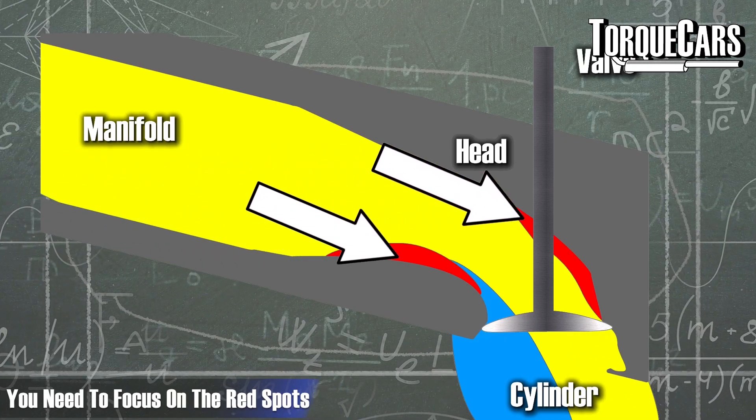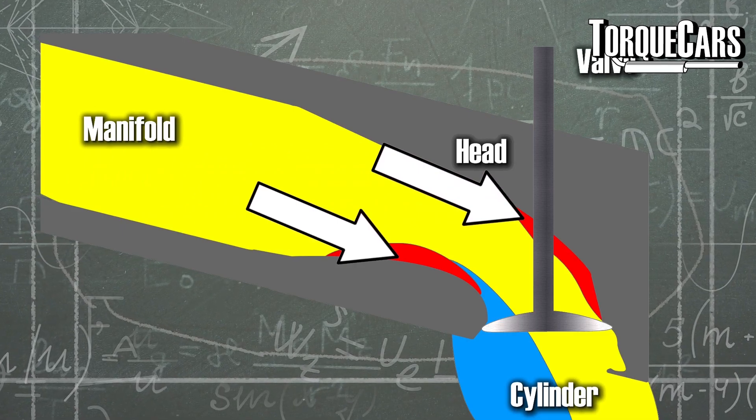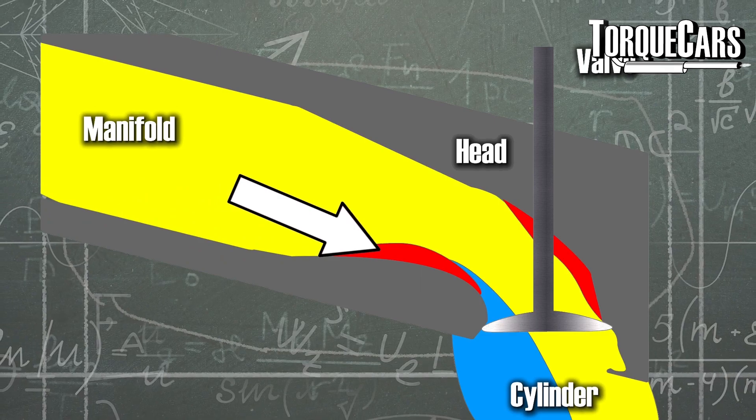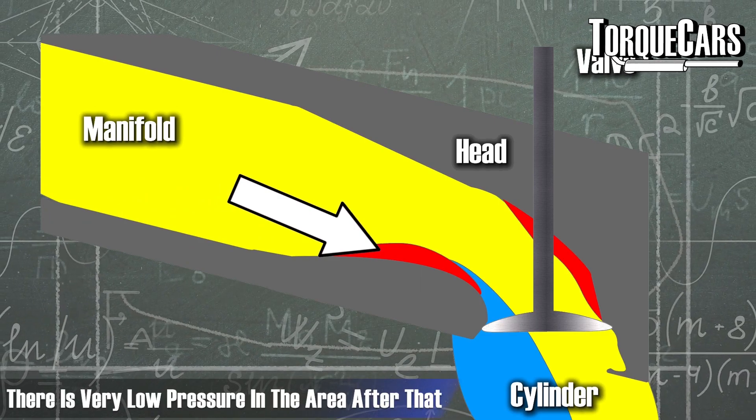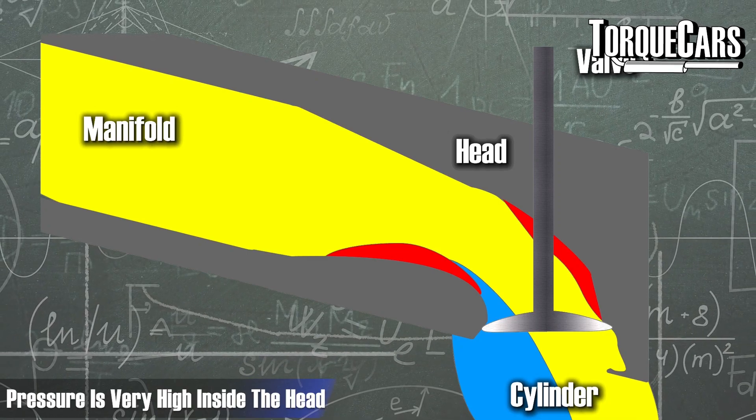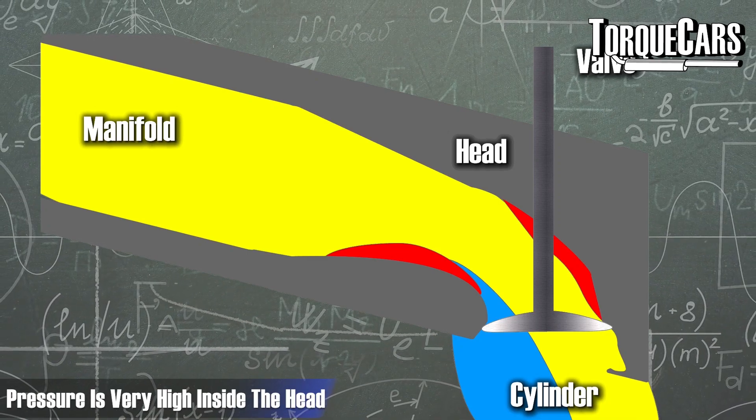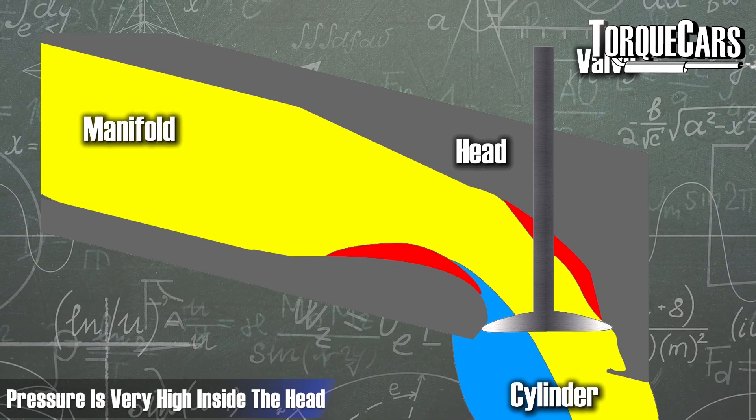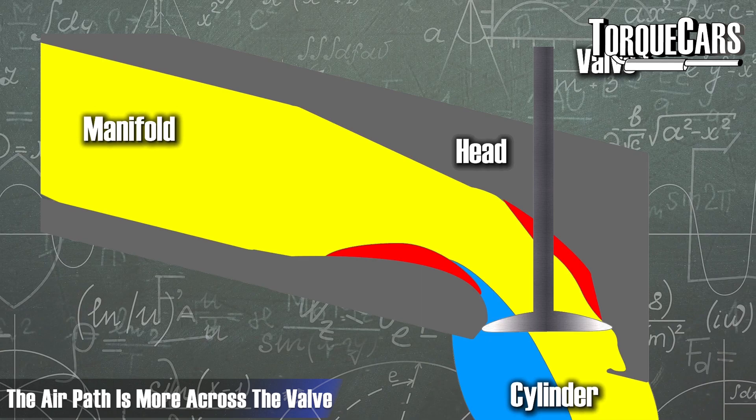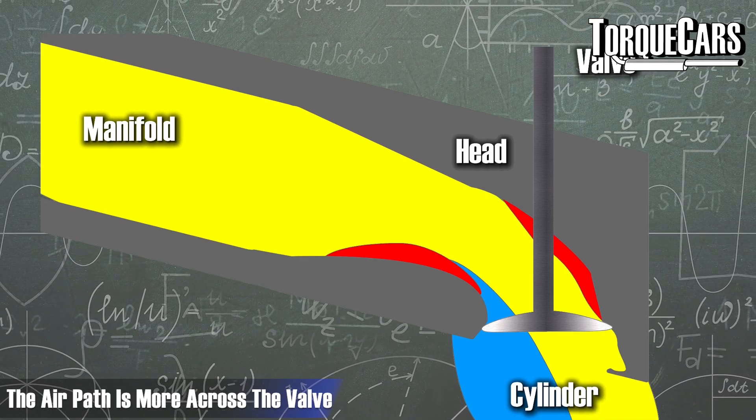In the case of the lower one, you've actually got an area of very low pressure immediately after that, because it's being pushed upwards. And then on the inside of the head itself, you've got another area of very high pressure where the air is hitting that and it's coming down. But you'll notice the overall path is more across the valve than directly around the valve into the engine.